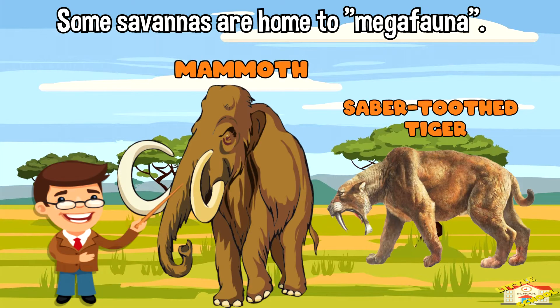Some savannahs are home to megafauna, which are large animals that are now extinct in other parts of the world, such as mammoths and saber-toothed tigers.